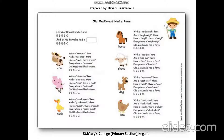Old MacDonald had a farm. E-I-E-I-O. And on his farm he had a pig. E-I-E-I-O. With an oink, oink here and oink, oink there. Here an oink, there an oink, and everywhere an oink, oink. Old MacDonald had a farm. E-I-E-I-O.